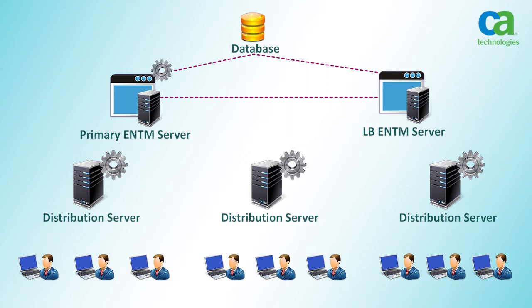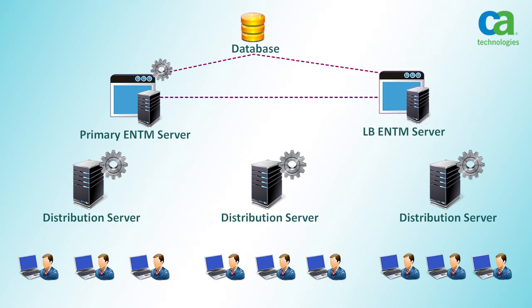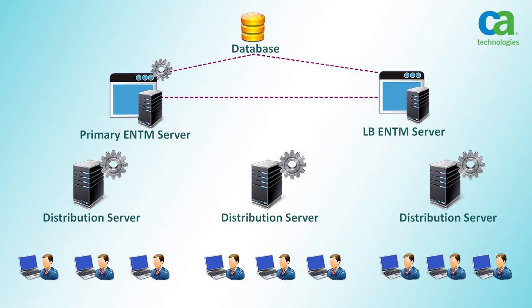A big advantage of using this feature is that most of this process is automated. While installing the load balancing Enterprise Manager server or distribution server, you just need to specify the name of the primary Enterprise Management server. After this, CA Control Minder automatically distributes the load across the relevant components.